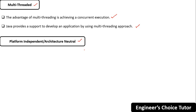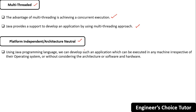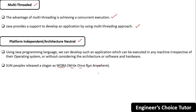The next buzzword is platform independent and architectural neutral. Using Java, we can develop applications that can be executed on any machine irrespective of the operating system, architecture, or hardware. That's why Java is called platform independent, and some people coined the slogan WORA — Write Once, Run Anywhere. For example, write a program in Windows and run it on Linux. We will see how this is possible in the next lecture.